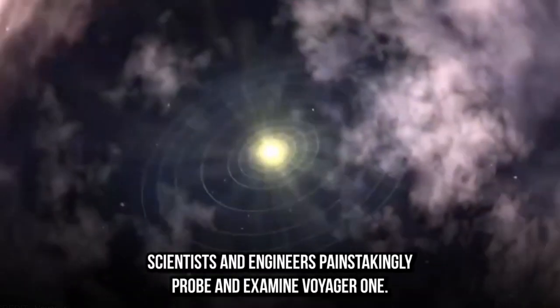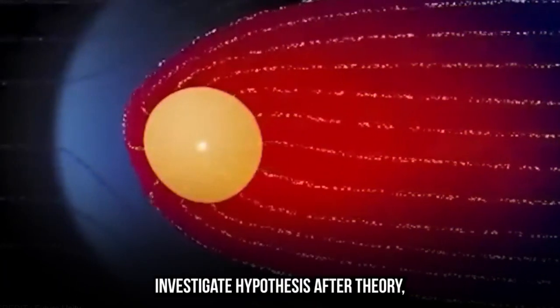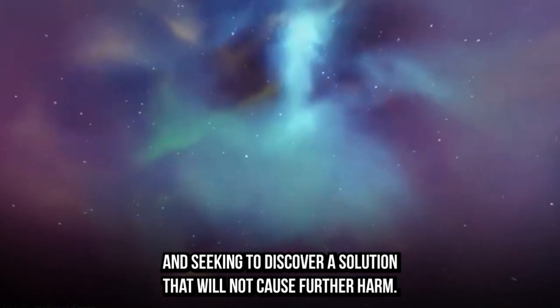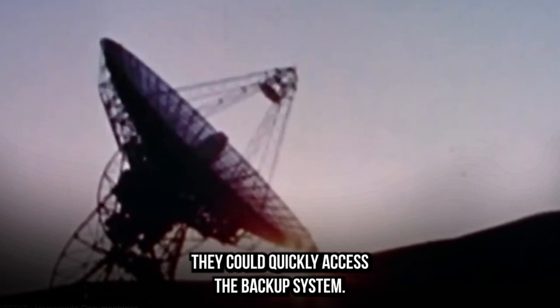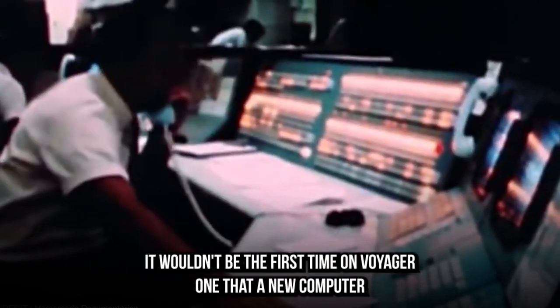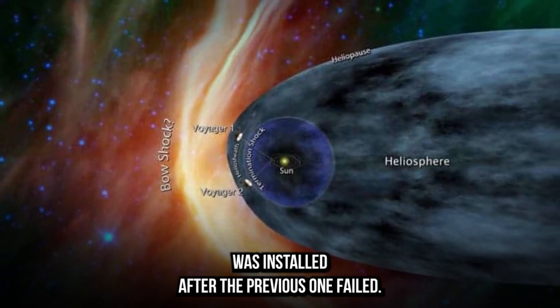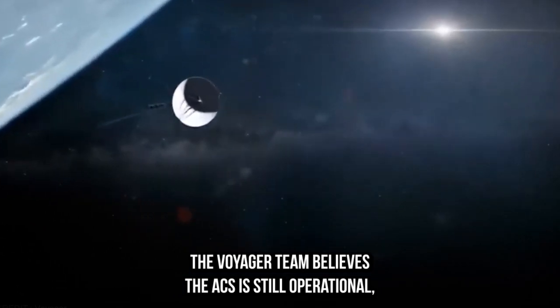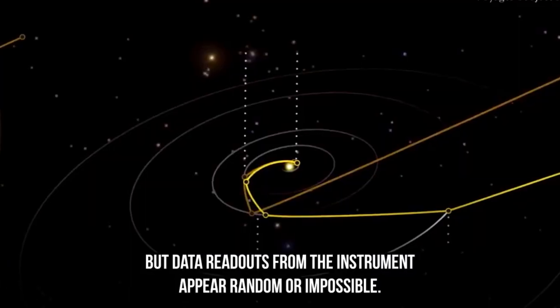Scientists and engineers painstakingly probe and examine Voyager 1, investigating theories and seeking a solution. They could quickly access the backup system. The Voyager team believes the AACS is still operational, but data readouts from the instrument appear random or impossible.